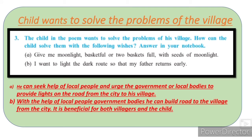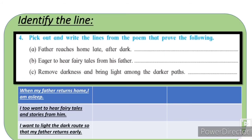Personal response activity: 'Child wants to solve the problems of the village.' بچہ گاؤں کے مسائل solve کرنا چاہتا ہے — 'Give me moonlight, basketful or two, with seeds of moonlight I want to light the dark route so that my father returns early.' جواب: He can seek help of local people and urge the government or local bodies to provide lights on the road from the city to his village. With the help of local people and government bodies he can build a road — it is beneficial for both villagers and the child.